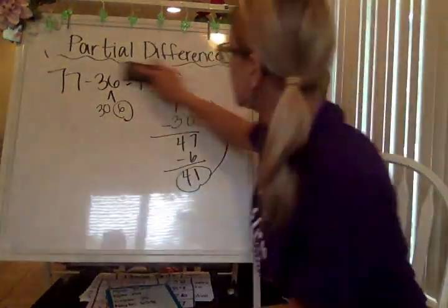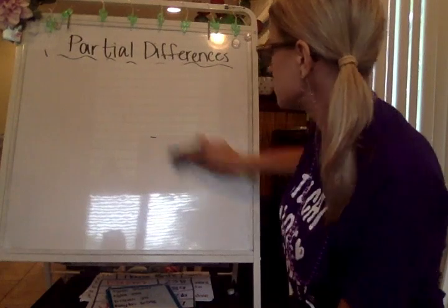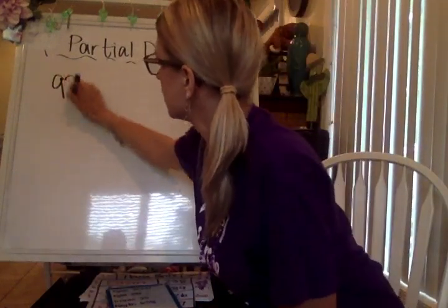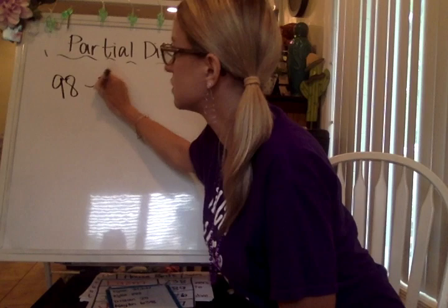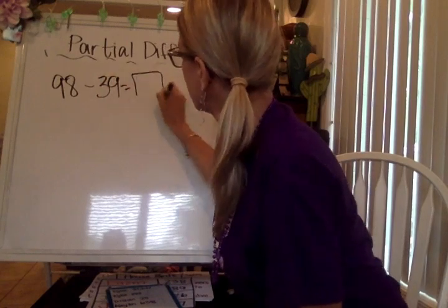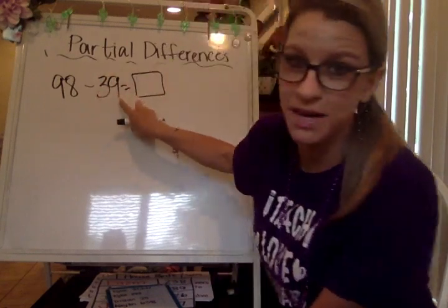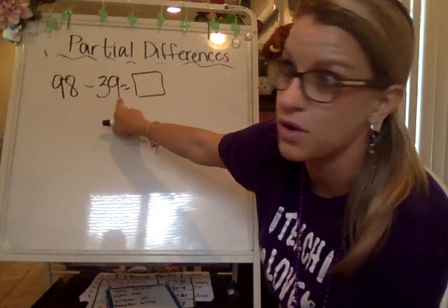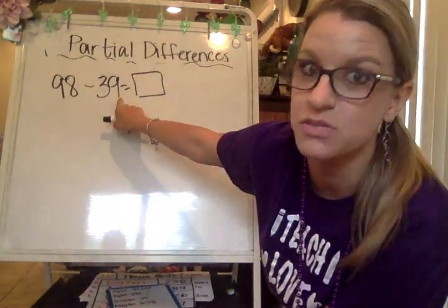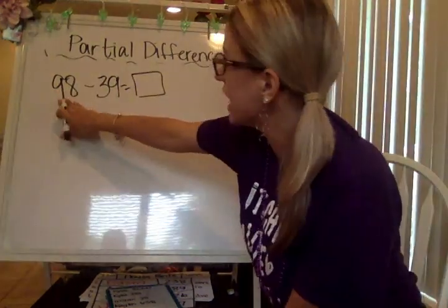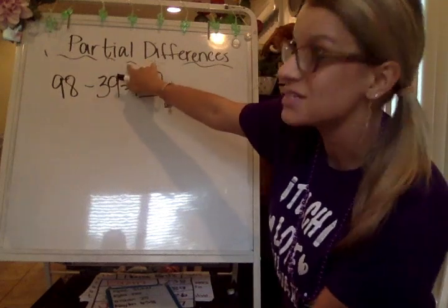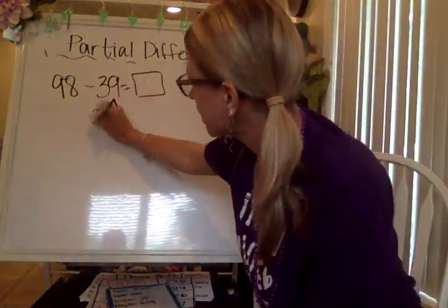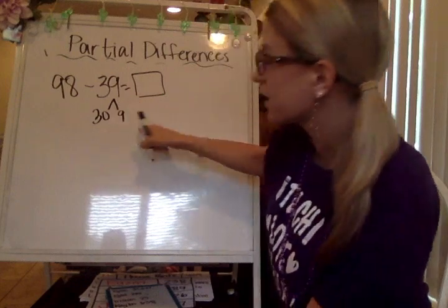Let me do another one. This one I made into a number that's going to have to be regrouped, so I want to show you what happens when you have to use regrouping. 98 minus 39 — you must solve it using partial differences. I'm going to break this apart like I did before, into 30 and 9.